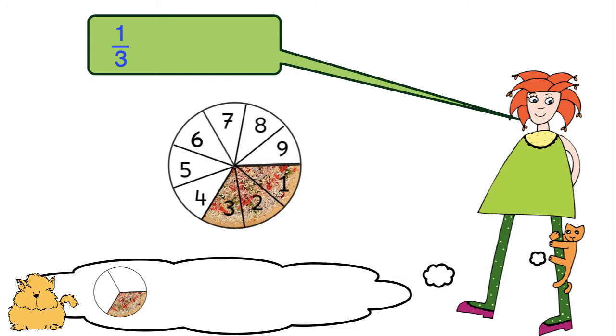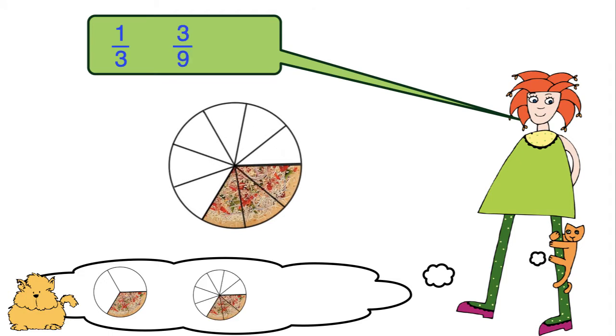As we can see, we've cut it into nine pieces, so we have three-ninths of the original pizza. Therefore, three-ninths must be the same as one-third.